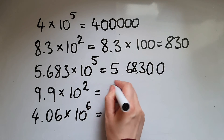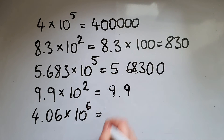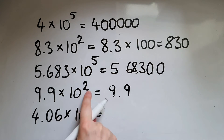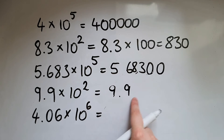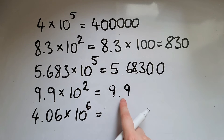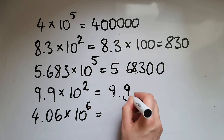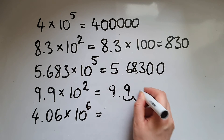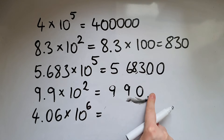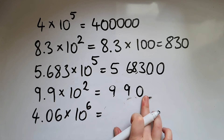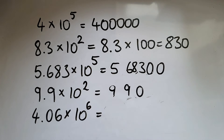9.9 times 10 squared, which is 100, so moving the decimal point two places to the right: one place and another. This becomes 990.